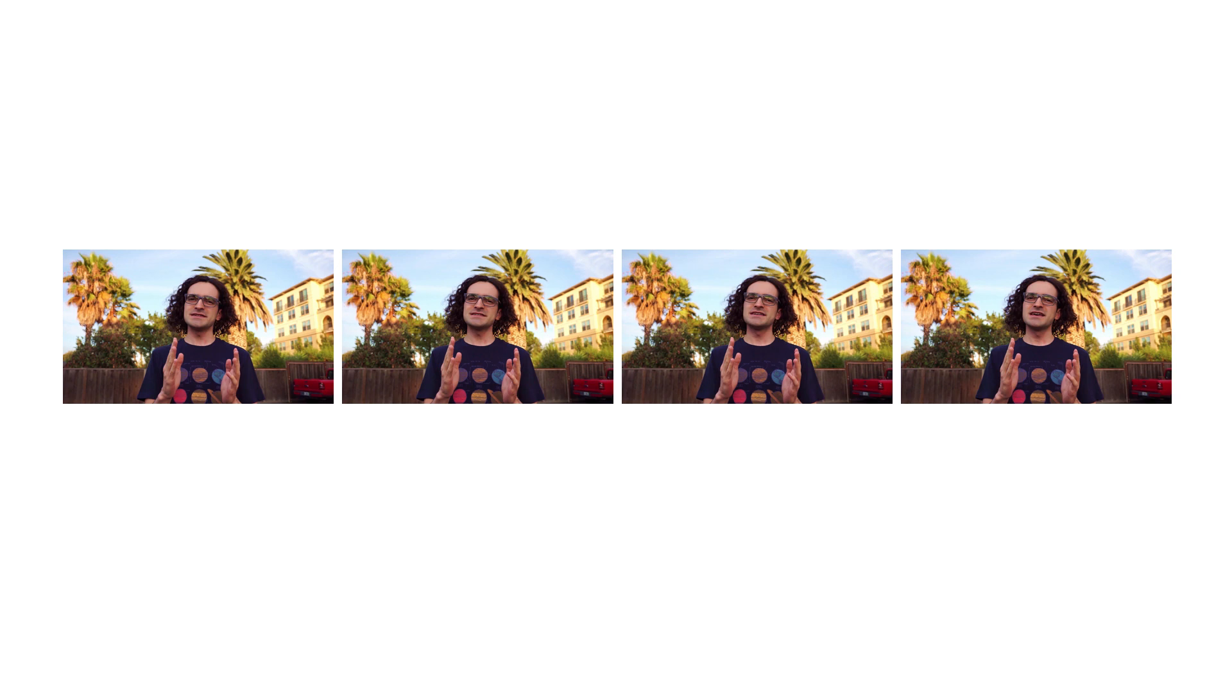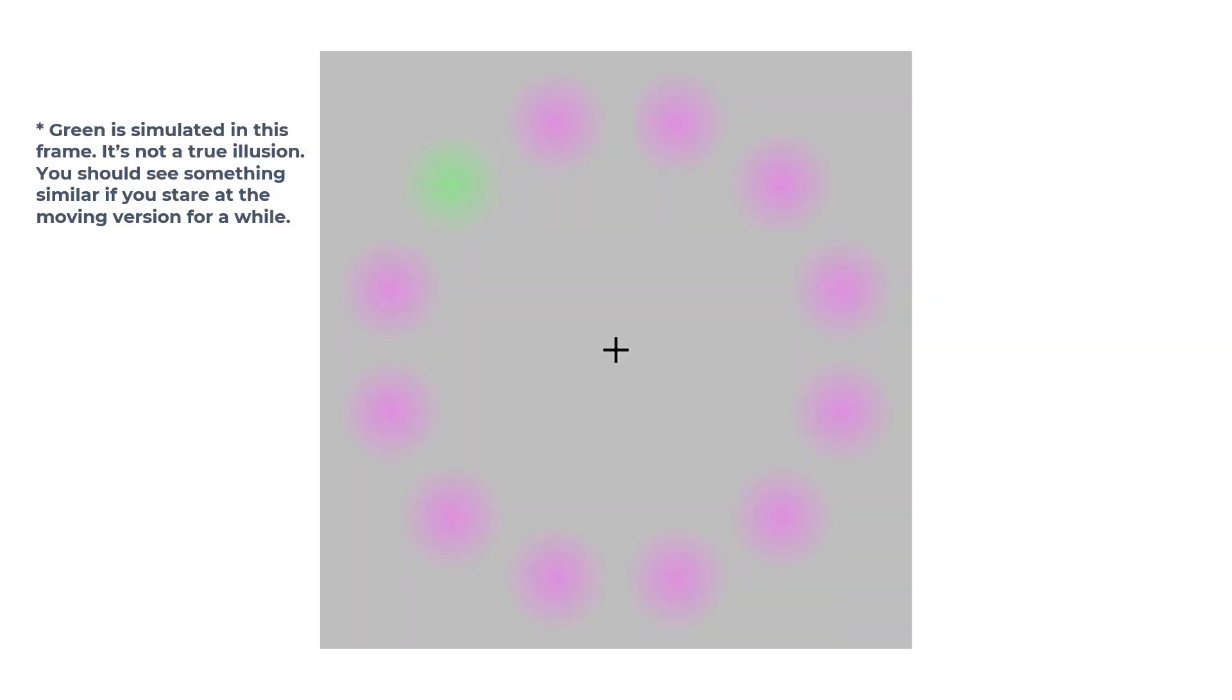So why does this happen? This illusion is actually a combination of three different illusions. First of all, nothing is really rotating. The apparent motion is a result of our brain filling in the gaps between the frames. If you think about it, nothing you watch on a display has a truly continuous movement. It's a series of discrete frames displayed one after another. Okay, this was probably something you already knew. So where does the green come from?